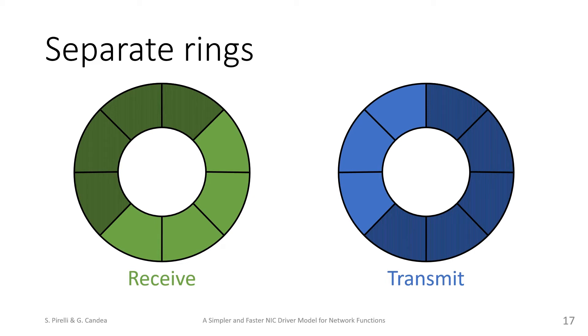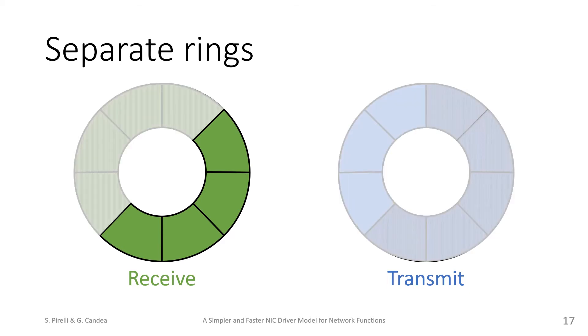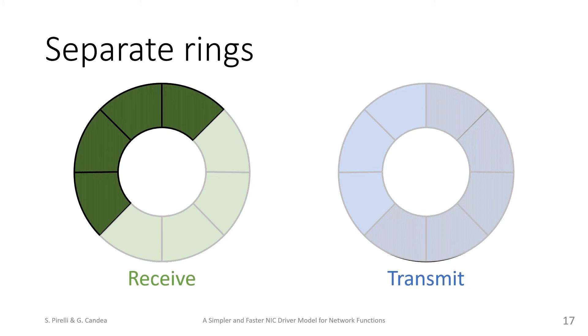The network card uses rings to manage buffers, with one part of the ring used by hardware and one part available to software. For instance, here are rings containing 8 buffers each. The part used by hardware of the reception ring corresponds to buffers being used to receive data, while the other part corresponds to buffers that have been filled with data and are waiting to be processed.